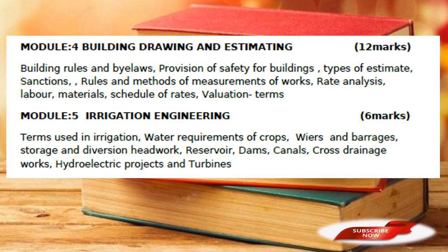Module 5 is irrigation engineering. Topics include: terms used in irrigation, water requirement of crops, weirs and barrages, storage and diversion headworks, reservoir, dam, canal, cross-drainage, hydro-electric project, and turbines. I have already created a playlist of these. It is about 6 marks for irrigation engineering. There are topics that are repeated from previous exams, and all the repeated questions have been included in the playlist.